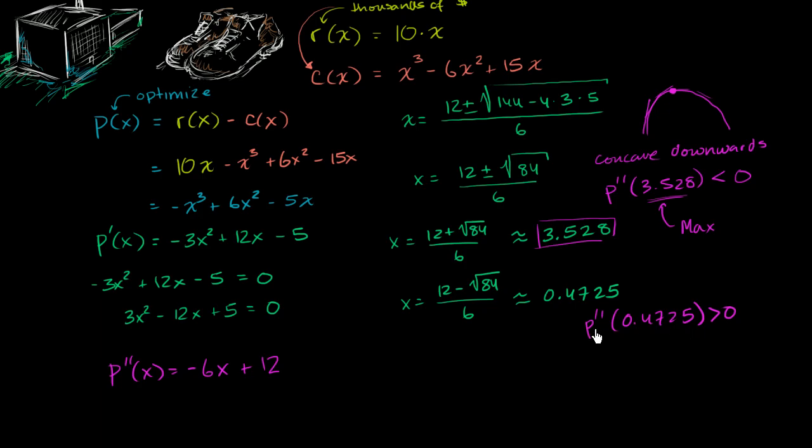On the other side, we see that we're concave upwards, and if the slope is 0 where the graph looks like that, we see that that is a local minimum. And so we definitely don't want to do this. We would produce 472.5 units if we were looking to minimize our profit, maximize our loss. So we definitely don't want to do this.